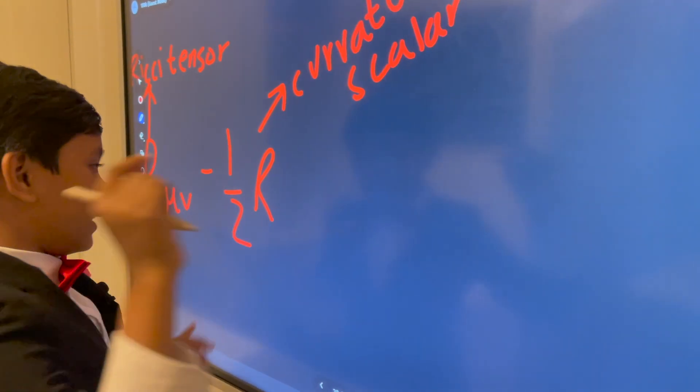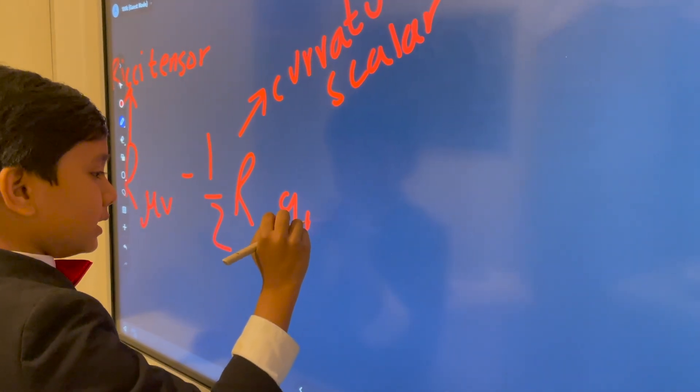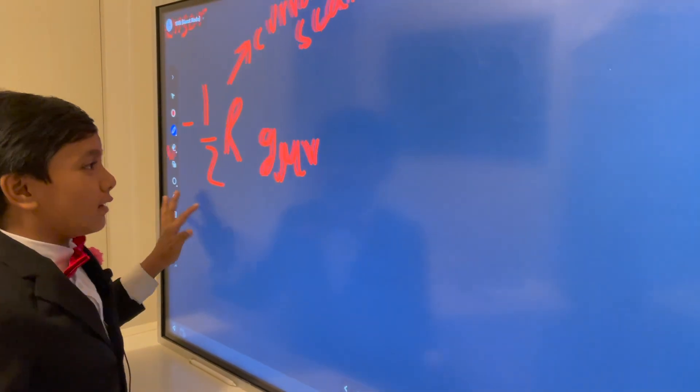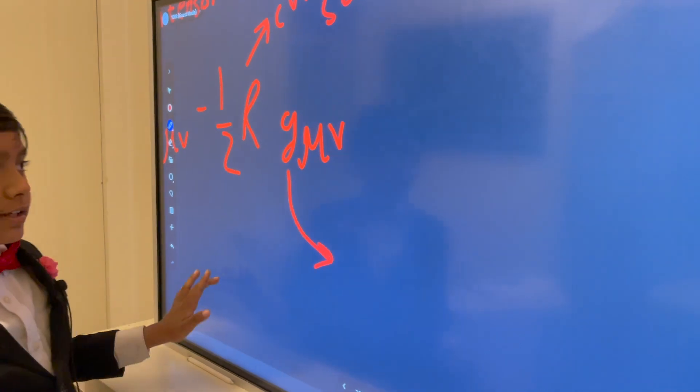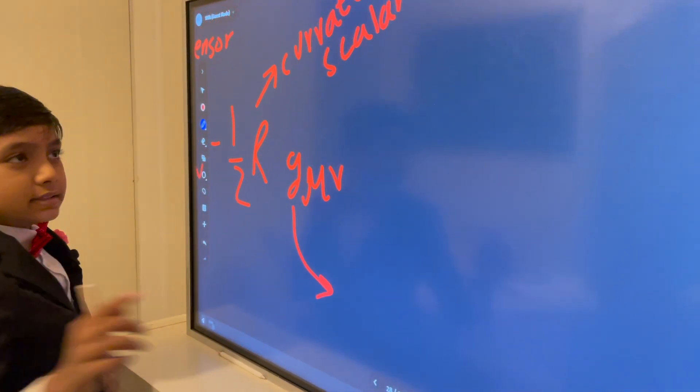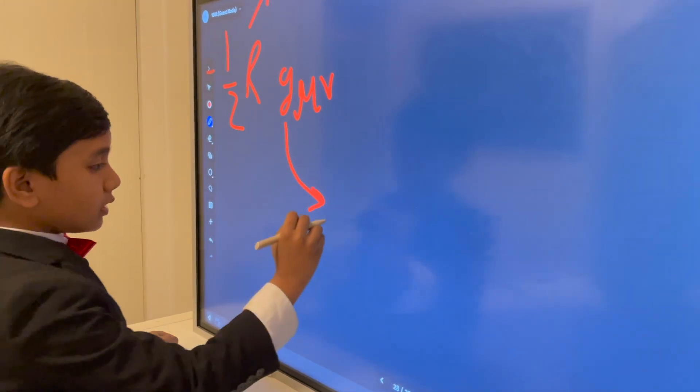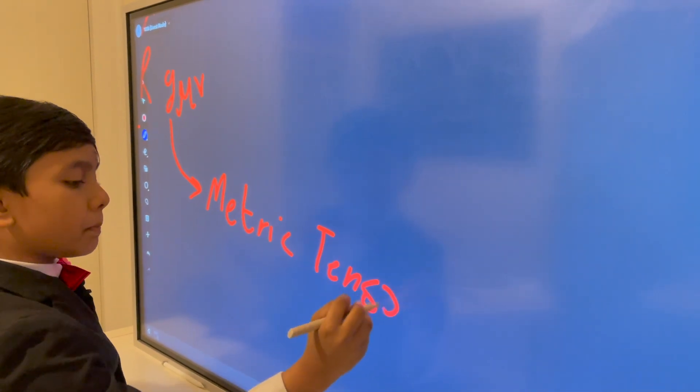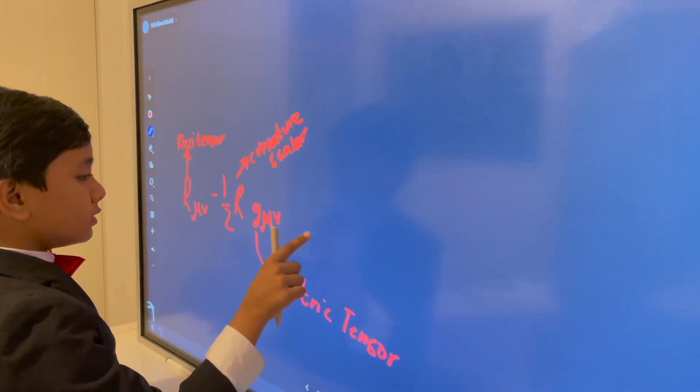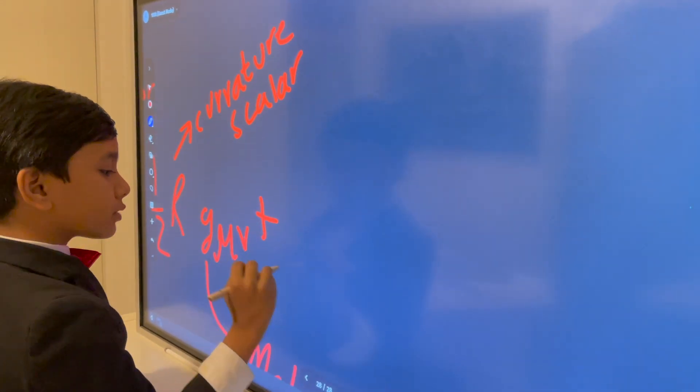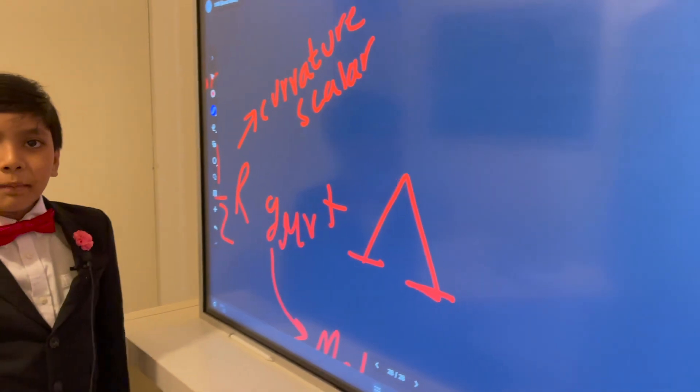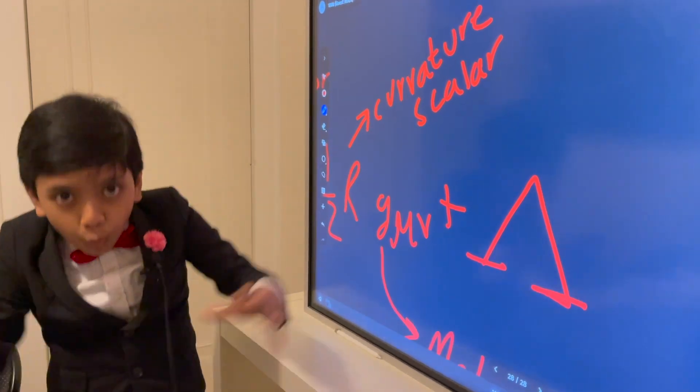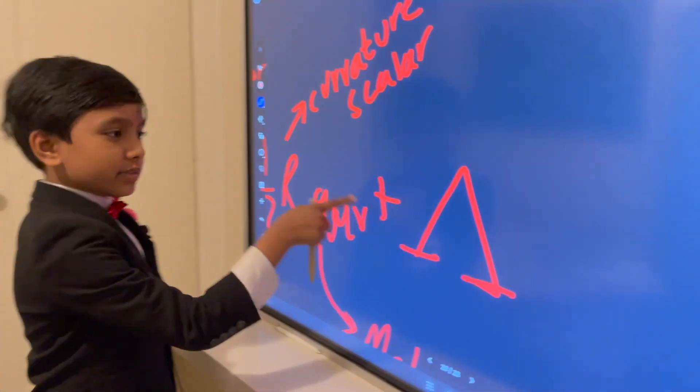And then you have g_μν. I have no idea how to pronounce it still, even after like one year of studying this equation. But g_μν is equal to the metric tensor. And then you add this to the cosmological constant. Which, for a high school dropout explanation, is mass, energy, pressure spread out through the world. Density. So that's basically it.